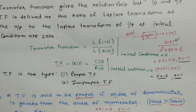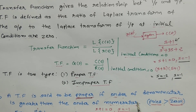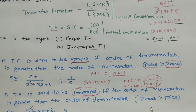We can also define proper and improper transfer functions using poles and zeros. If the number of poles is greater than the number of zeros, that is a proper transfer function, which is equivalent to the denominator order being greater than the numerator order. If the number of zeros is greater than the number of poles, then that is an improper transfer function.